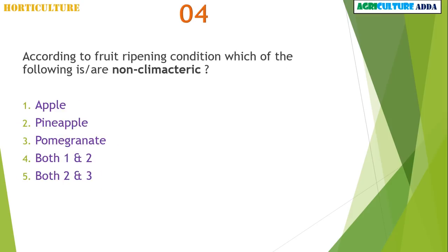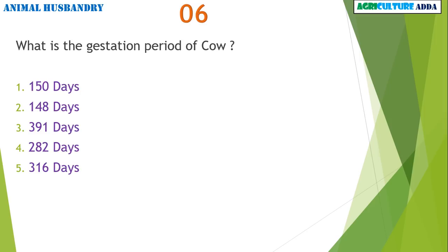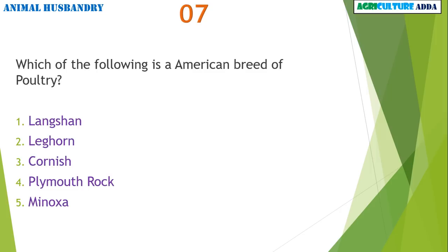According to fruit ripening condition, which of the following is or are non-climacteric? Pineapple and pomegranate — that is both options two and three. Balasta is a fruit type of pomegranate. What is the gestation period of cow? 282 days.